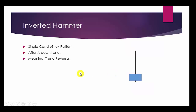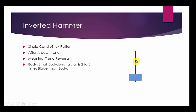Its body is small and its tail should be at least two to three times bigger than its body — small body, long tail, two to three times bigger than its real body.